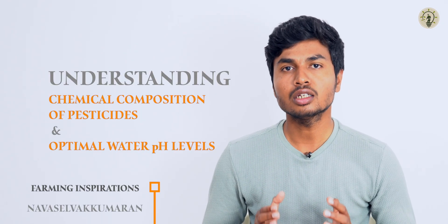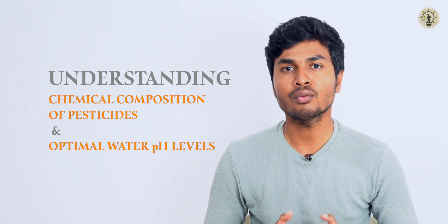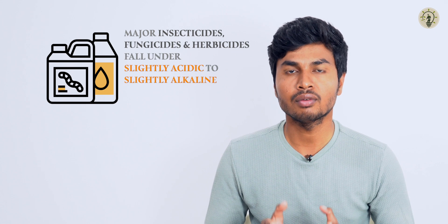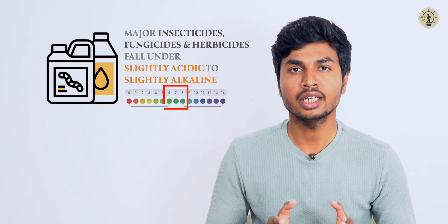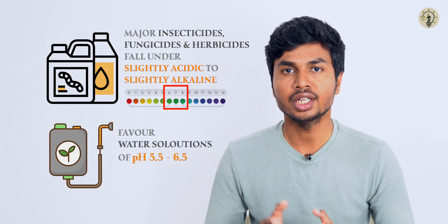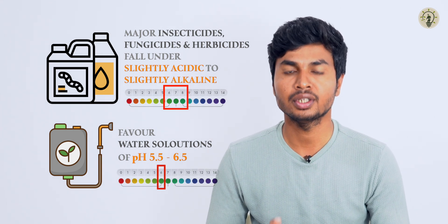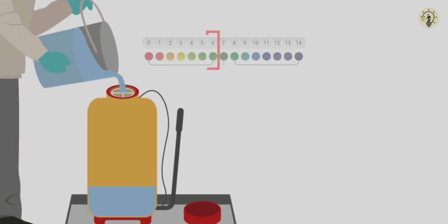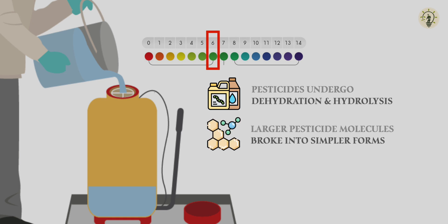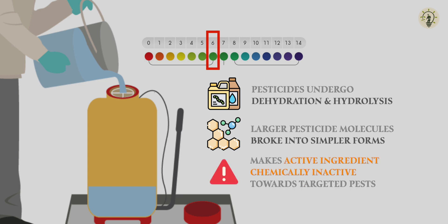Understanding the chemical composition of pesticides and the requirement of optimal water pH levels is crucial. The chemical composition of major insecticides, fungicides, and herbicides falls under slightly acidic to slightly alkaline, favoring specific water solutions of pH ranging between 5.5 and 6.5. If the pH falls outside this range, pesticides undergo degradation and hydrolysis, where larger pesticide molecules break into simpler forms, making the active ingredient chemically inactive towards targeted pests.